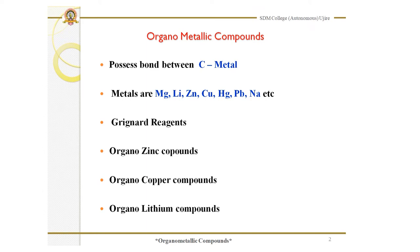The organometallic compounds include Grignard reagents, organozinc compounds, organocopper compounds, organolithium compounds, etc. Grignard reagents contain magnesium as the metal, organozinc contains zinc, organocopper contains copper, and organolithium compounds contain lithium as the metal.